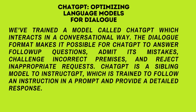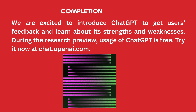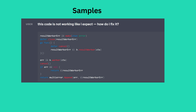We've trained a model called Chat which interacts in a conversational way. The dialogue format makes it possible for Chat to answer follow-up questions, admit its mistakes, challenge incorrect premises, and reject inappropriate requests. Chat is a sibling model to InstructGPT, which is trained to follow an instruction in a prompt and provide a detailed response. We are excited to introduce Chat to get users' feedback and learn about its strengths and weaknesses. During the research preview, usage of Chat is free. Try it now at chat.openai.com.